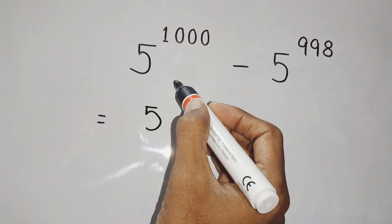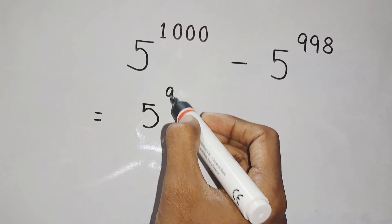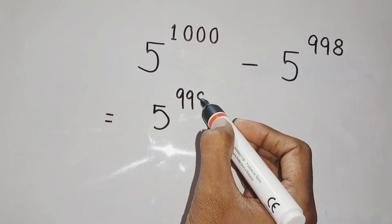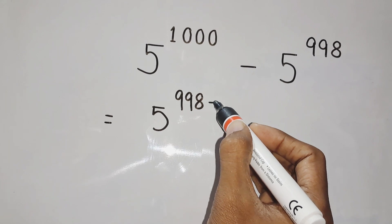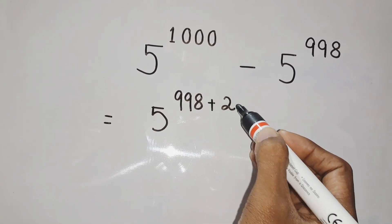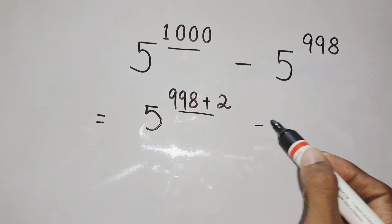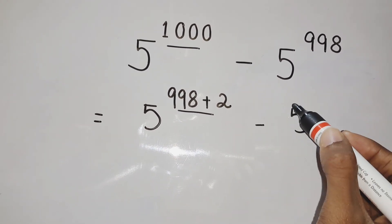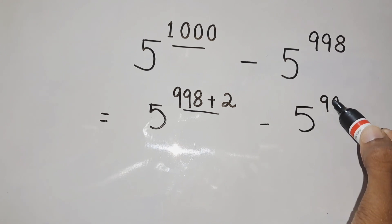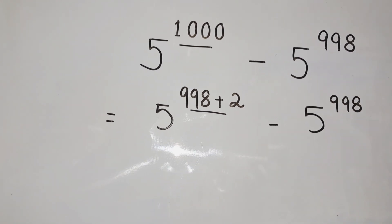5 to the power 1000 can be written as 5 to the power 998 plus 2, because 1000 is 998 plus 2, minus 5 to the power 998 as it is.